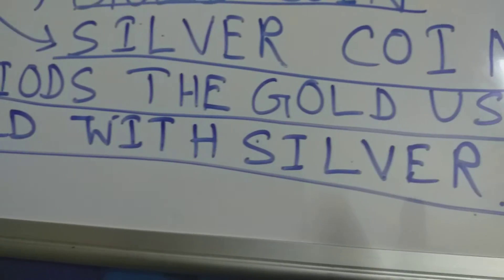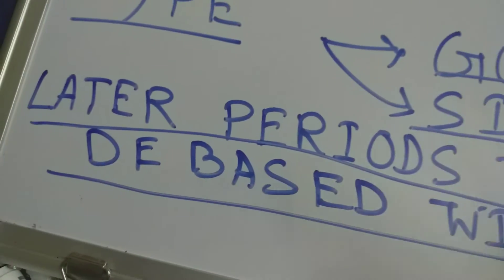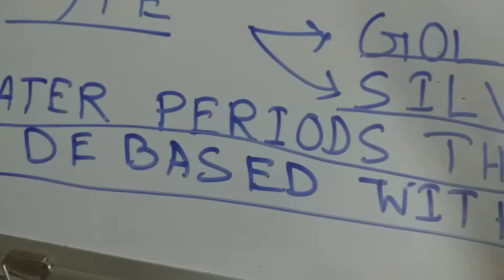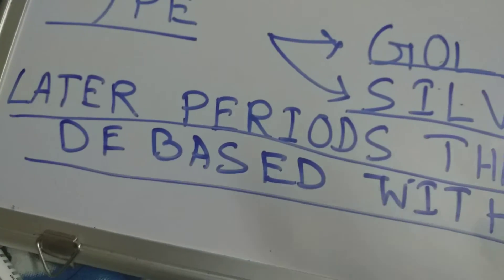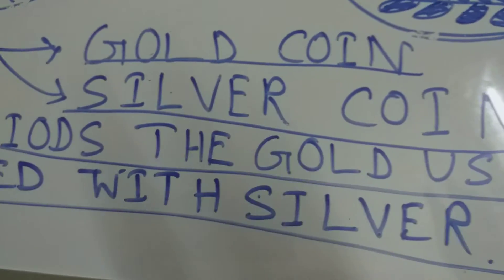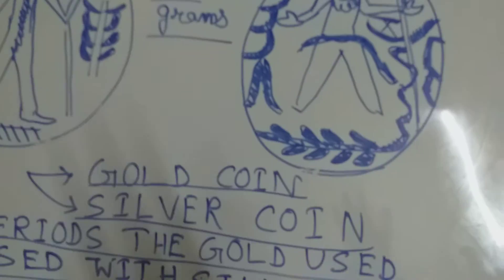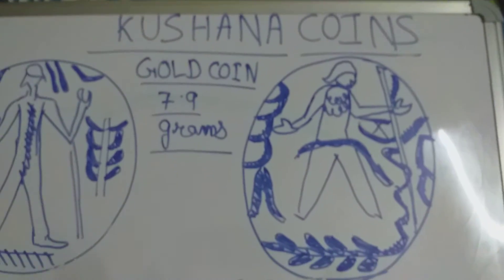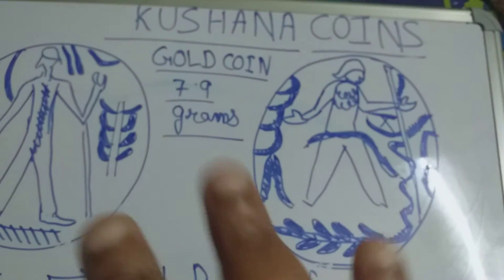In the latter period, the gold used in coins was debased with silver. This means that towards the end of the Kushana period, people used gold mixed with silver in the coins. This is the front side and back side of the gold coin.